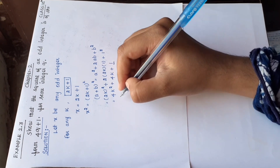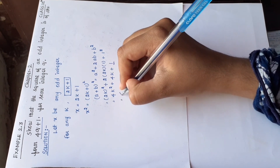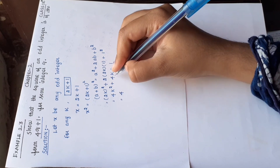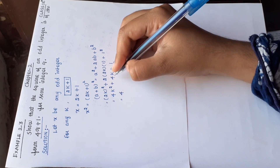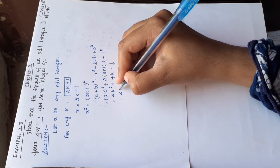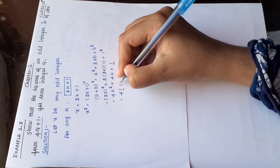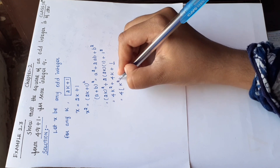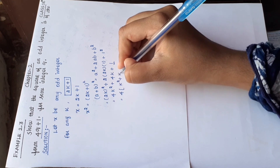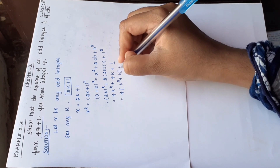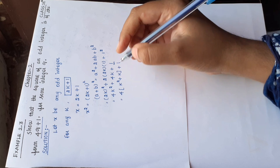இதுல நாம் 4 வந்து common out பண்ணிட்டோம். First 2 terms-ல 4 common out பண்ணினா remaining-ல என்ன இருக்கு: k square plus k. அப்படியே plus 1 இருக்கும். So, 4(k square plus k) plus 1.